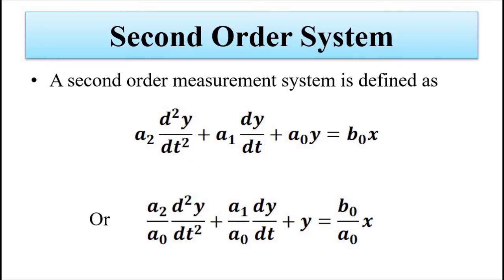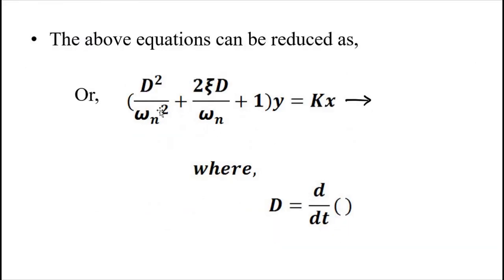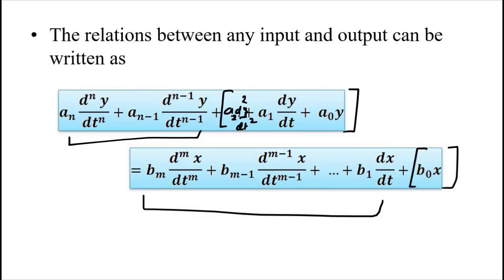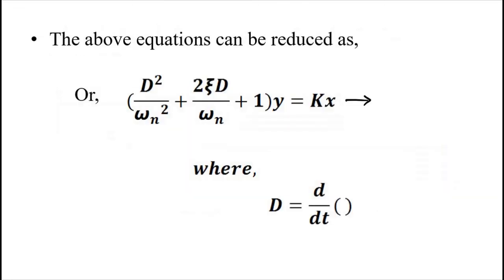We have discussed the first order system and the second order system — their general representations in terms of undamped natural frequency, damping ratio, and static sensitivity. This covers the dynamic relationship between input and output for a measuring system. I hope you liked this video. Please subscribe to Engineering Tutorial for more videos related to engineering, science, and technology. Thank you very much, have a great day.